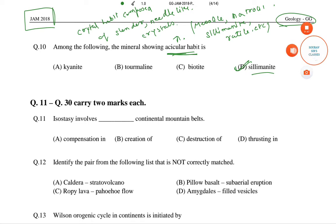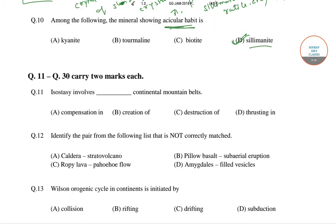In the next question we have a fill in the blank: isostasy involves [blank] continental mountain belts. Isostasy is the state of gravitational equilibrium between Earth's crust and mantle.